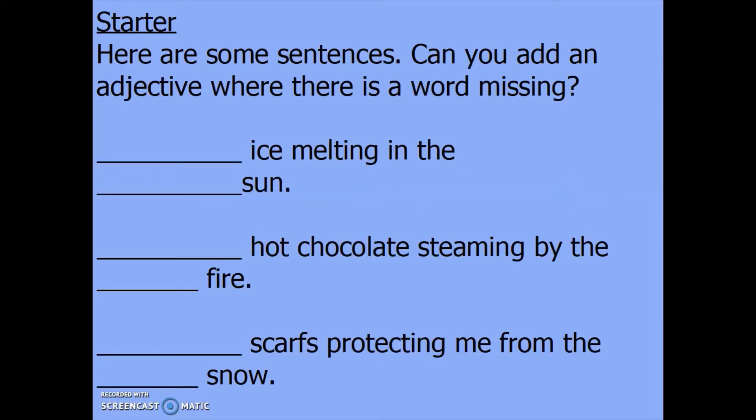To start with we've got some sentences and I want you to add an adjective where there is a missing word. Remember that an adjective is a word which describes a noun. For example, you could describe an object as shiny, or beautiful could be an adjective to describe a person. Pause the video here and write your sentences in your literacy book.